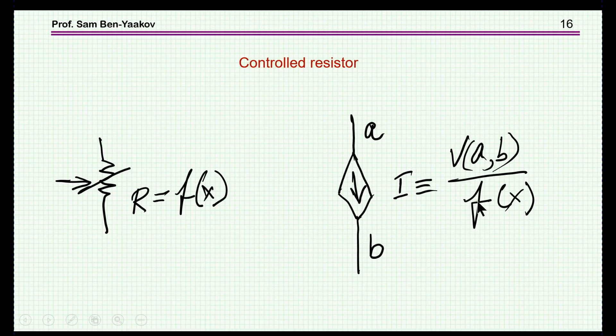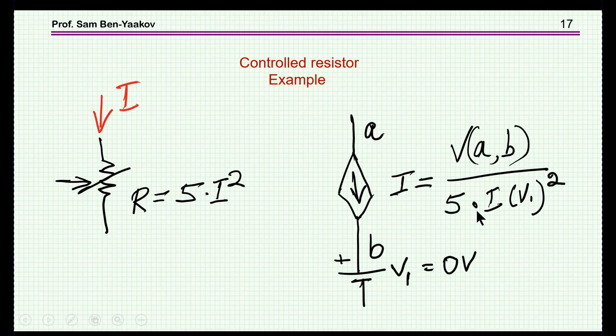We can represent a resistor by a current source which is defined as the voltage across this current source divided by this function which is the resistance. This could be a fixed resistor or some other function depending on something else. For example, suppose I'd like to represent a variable resistance which is dependent on the current through it with this function 5I squared. I have a current source defined as the voltage across it divided by the function. Conveniently we put a voltage source of value zero just for sensing the current. Then I can write I of V1, which means the current flowing through this voltage source. Therefore, this model is representing this dependent resistance.